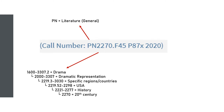After a decimal, a new letter-number combination is sometimes used to be even more specific about the topic. In this case, F45 is the code for feminist theater. So you could theoretically figure out, just from this number, that this book is about the history of 20th century American feminist theater.